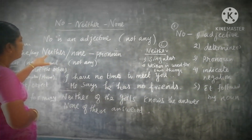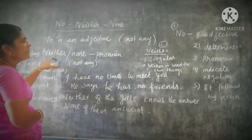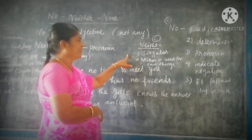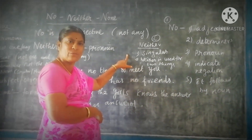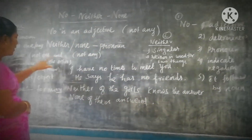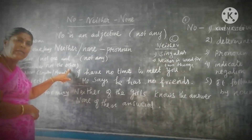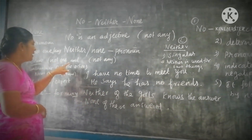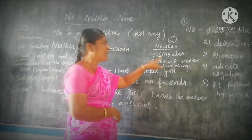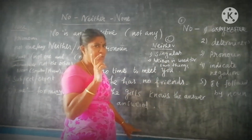The next word is neither. The word neither always takes only a singular noun. It means not one and not the other — it does not refer to any one of the two. Neither is used for only two things.